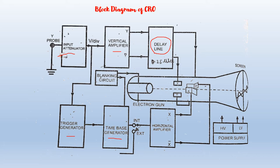The next block is the Horizontal Amplifier. This amplifies the sawtooth voltage. As it includes a phase inverter, two outputs are produced — a positive-going sawtooth and a negative-going sawtooth — which are applied to the right-hand and left-hand horizontal deflection plates of the CRT.